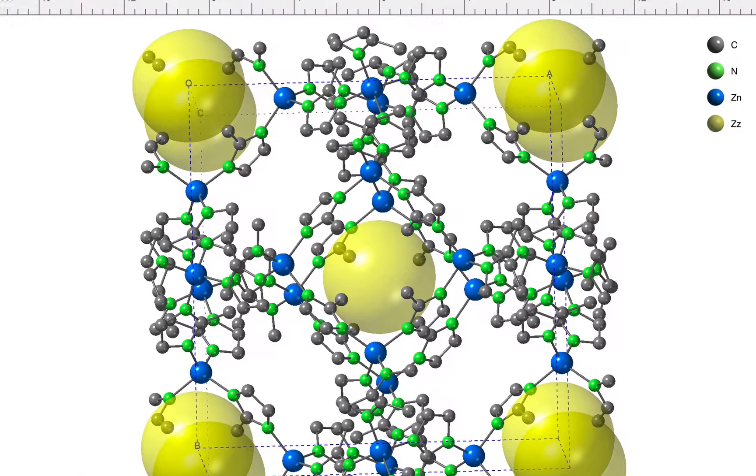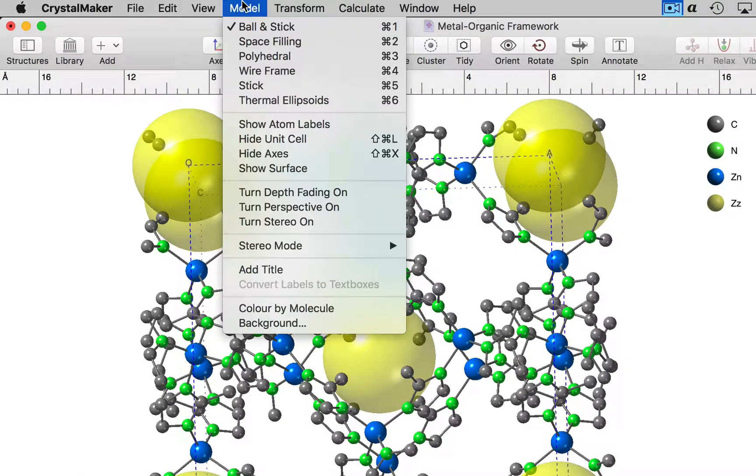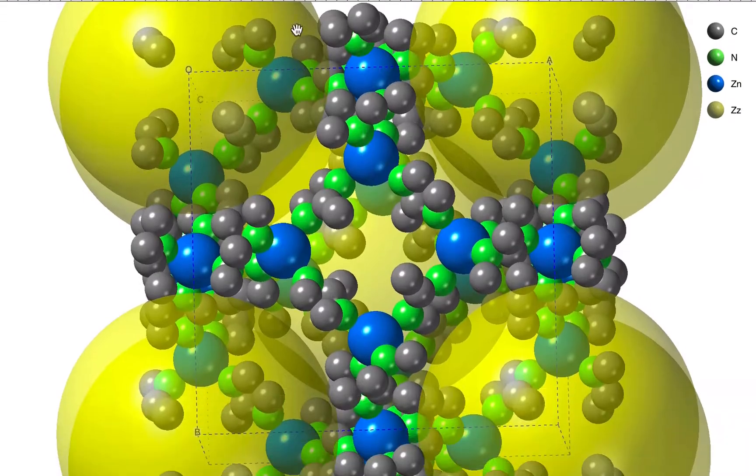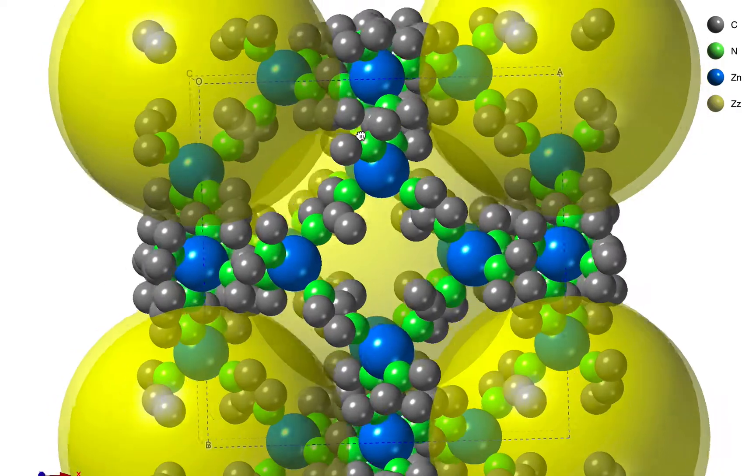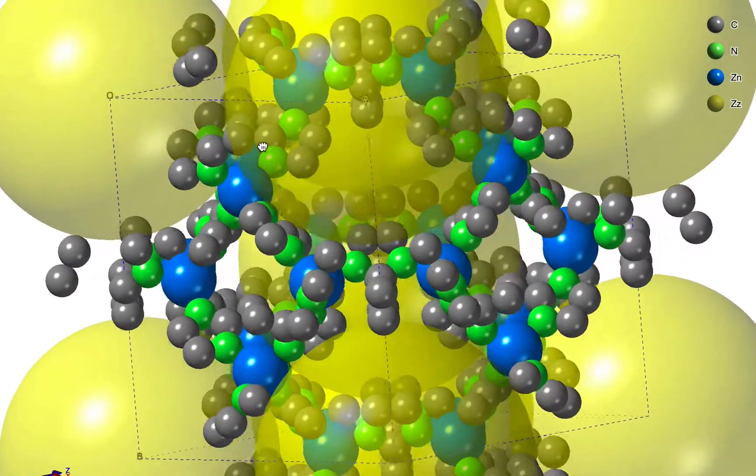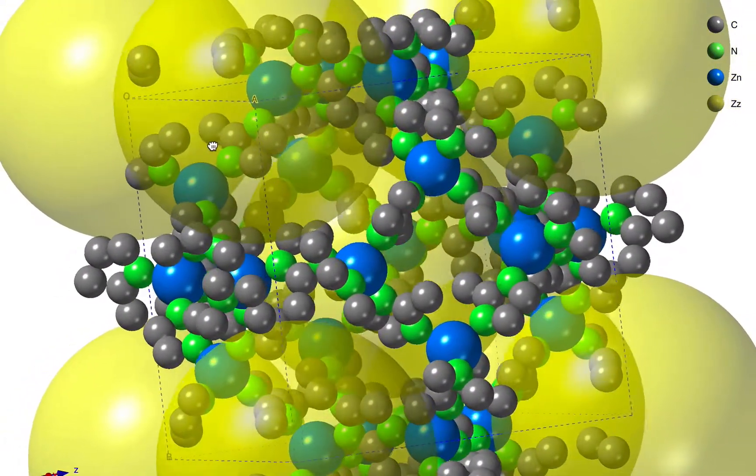If we make this a space-filling model, you can see that these large yellow sites completely fill their cavities and touch the surrounding atoms.